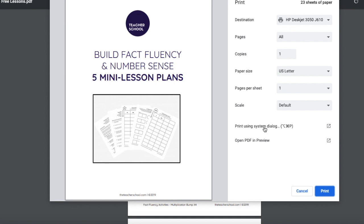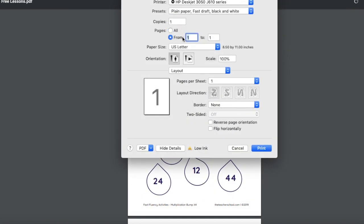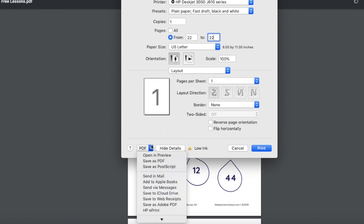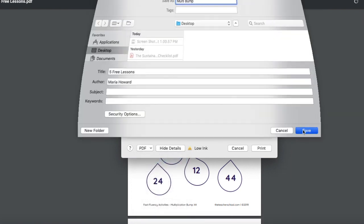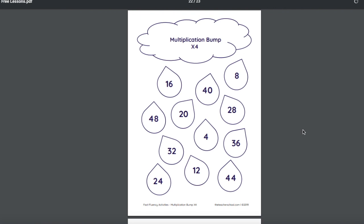So I went to print, I went to the print using system dialog button, and I selected 22 out of 22, which means that I'm only going to print this page, which is the second to the last page. I'm going to click on the pdf button and save as pdf. I'm going to call it multi-bump, and what this allows me to do is just save this particular page. And once I do that I'm going to go to my BitPaper.